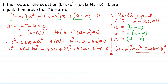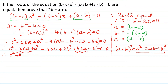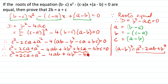Let me draw a line here to separate our thinking step. Can you see the ca terms? We bring them together: minus 2ca plus 4ca gives us plus 2ca. So minus 2 plus 4 gives plus 2ca. We now have: c squared plus 2ca plus a squared minus 4ab plus 4b squared minus 4bc, and that's equal to 0.